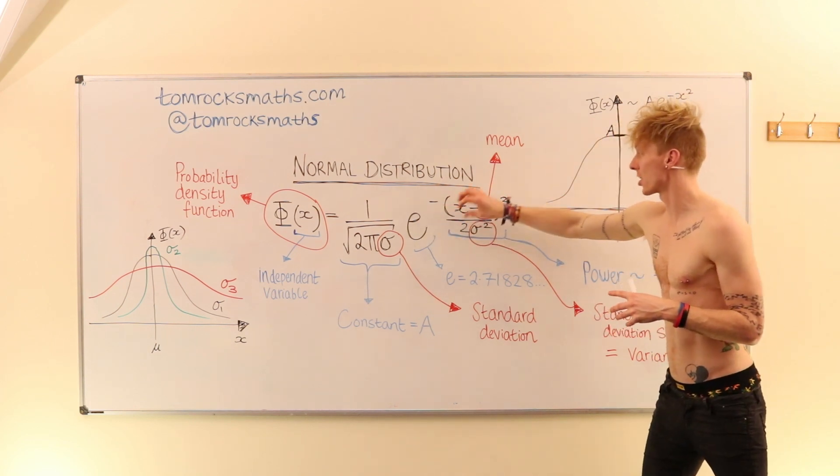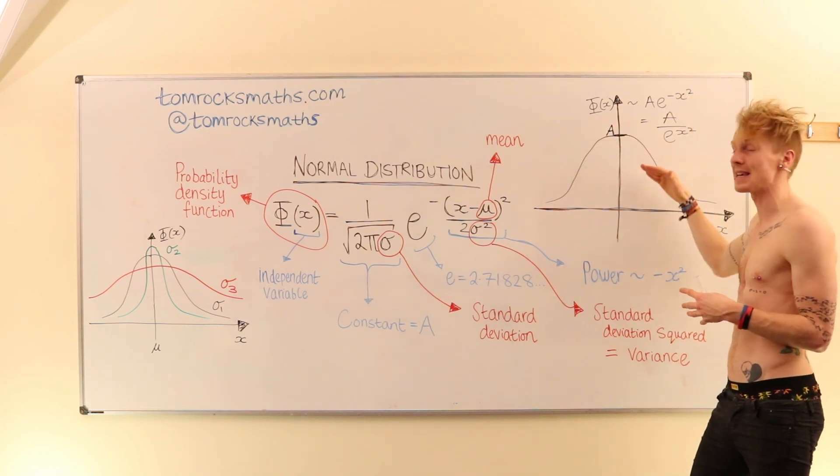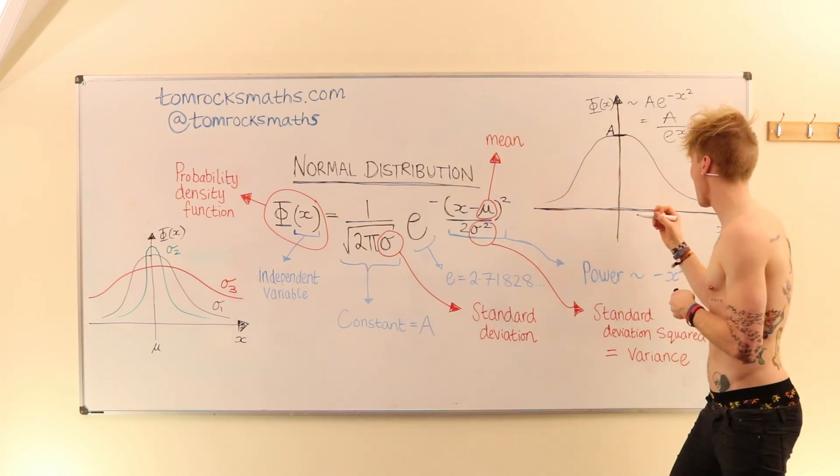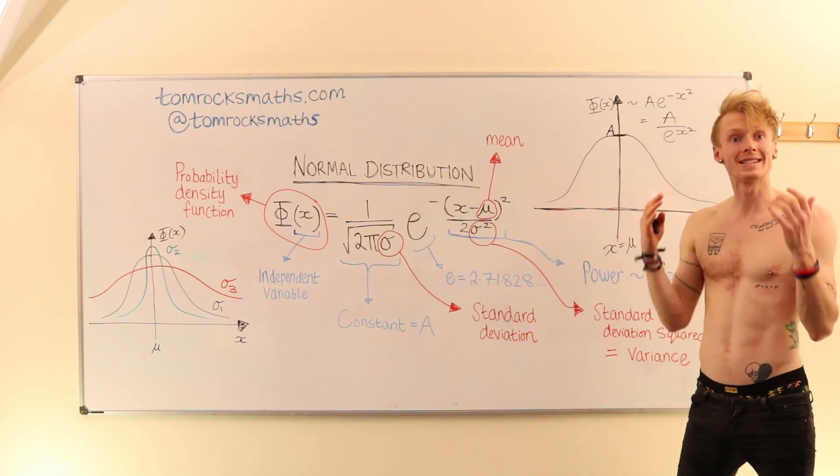your exponential term is to a 0 power and becomes 1. And so the maximum value, this peak, will actually occur when x is equal to mu, the mean value of your data.